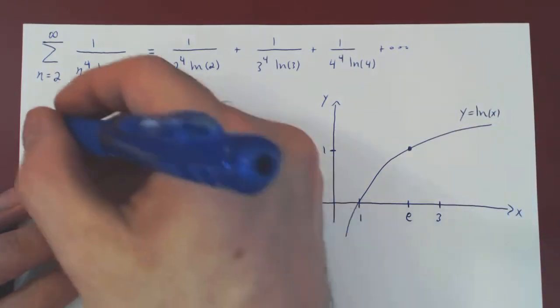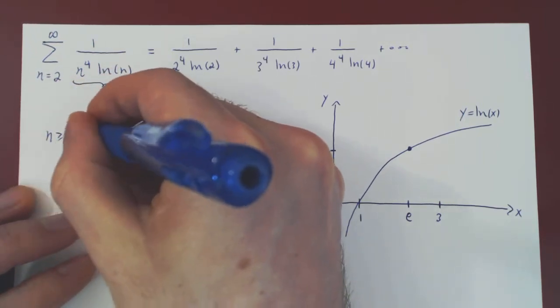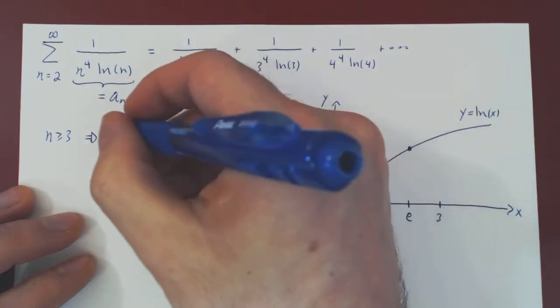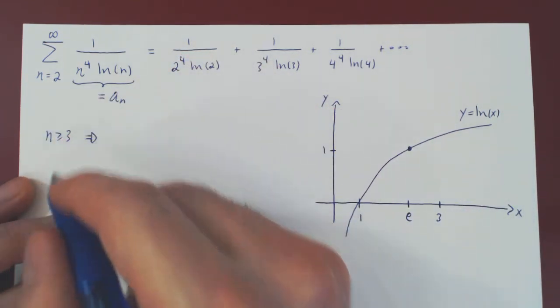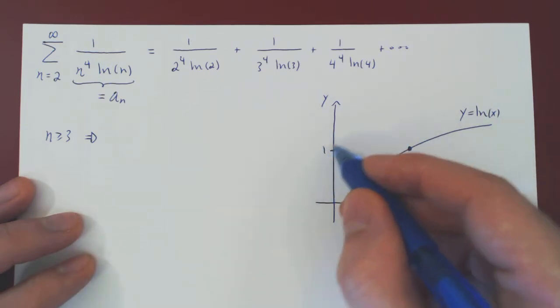So this is how we're going to start the argument. So as long as n is above 3, then ln of x is larger than 1, and so ln of n for any integer that is 3 or greater will be giving us a value larger than 1.